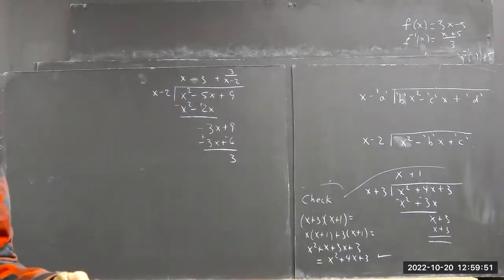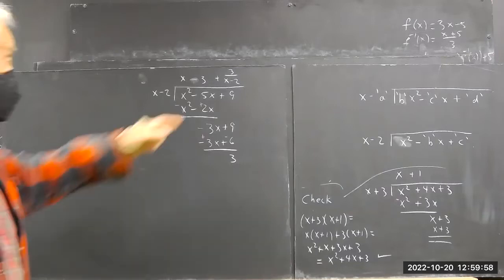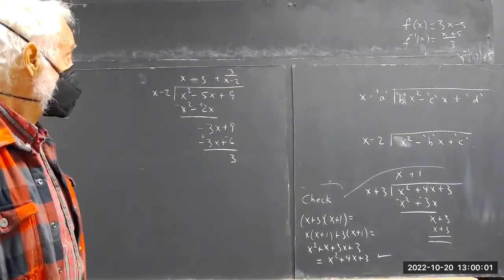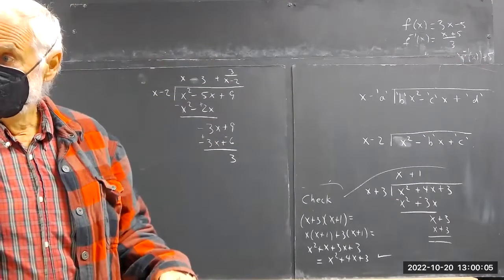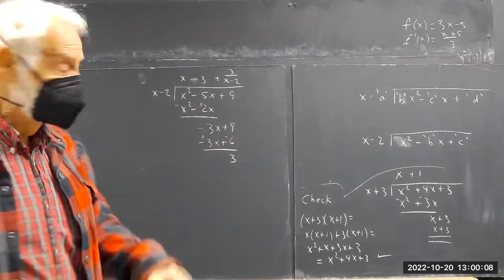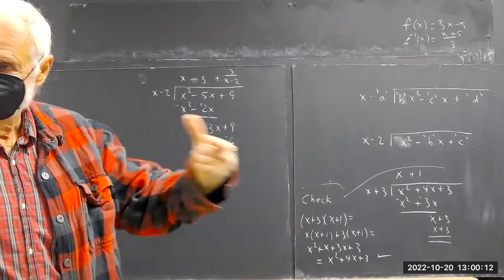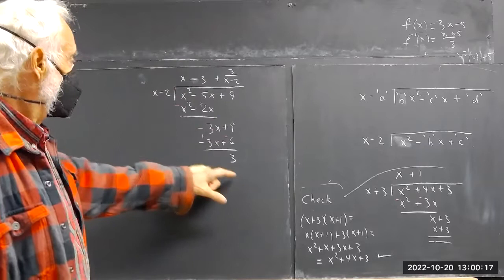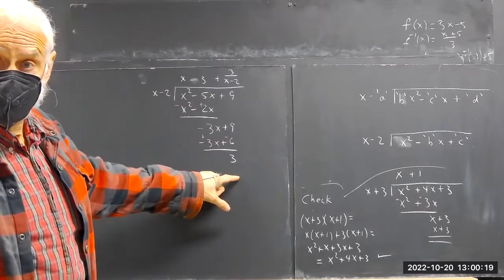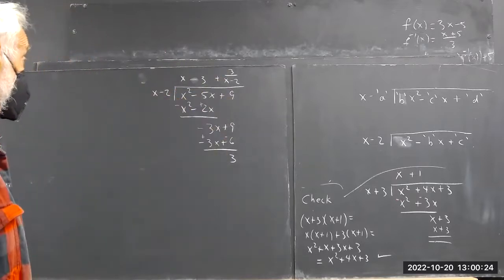That's what you do with a remainder — remember the division algorithm from fifth grade. You put your remainder over your divisor. You can write it as remainder 3, but if you want to express it as a function, remainder 3 doesn't mean anything in function language. It means you have a 3 that needs to be divided by x minus 2, and you can't divide x minus 2 into 3, so you write 3 divided by x minus 2.